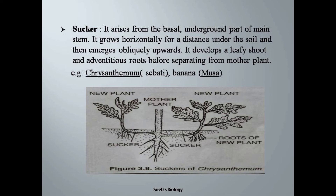Next comes another modification — sucker. Here the stem is small; some part is underground and some part is above the ground. From the underground part of the stem, branches arise from the nodes. The branch grows horizontally for a distance under the soil, then moves obliquely upward and gives rise to another stem. This branch also has nodes and internodes, and adventitious roots arise from this vertical stem above the soil.